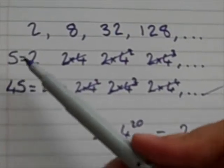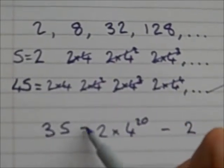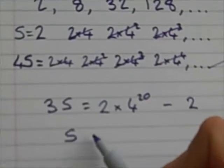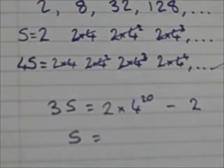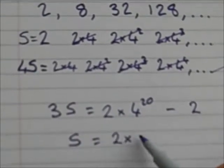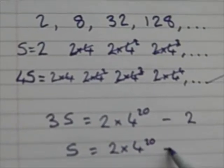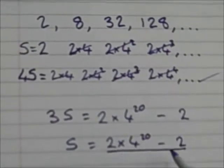And that was 4S take away S. So to work out S, which is my sum to 20 terms, I just have 2 times 4 to the power 20 take away 2 divided by 3.